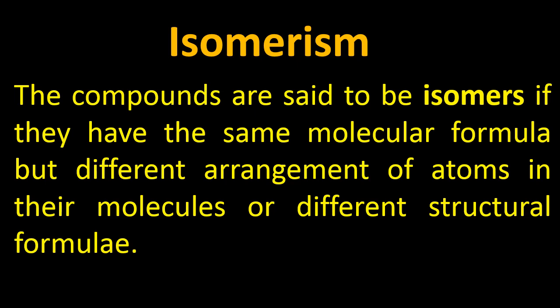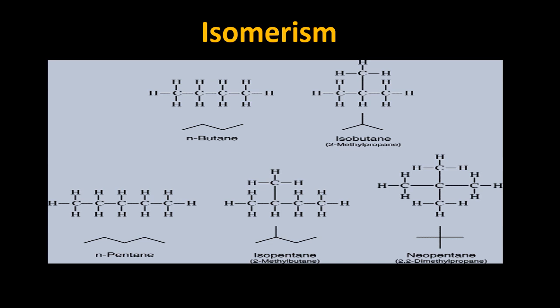Let's take an example — the isomers of butane and pentane. In the case of butane, we have two isomers: N-butane and isobutane. In N-butane, we have four carbon atoms. Similarly, in isobutane, we have four carbon atoms, but their arrangement is different. One carbon is present in a branched form with the other carbon atoms in isobutane. The total number of carbon atoms is the same, but their arrangement is different. That's why hydrocarbons show diversity.